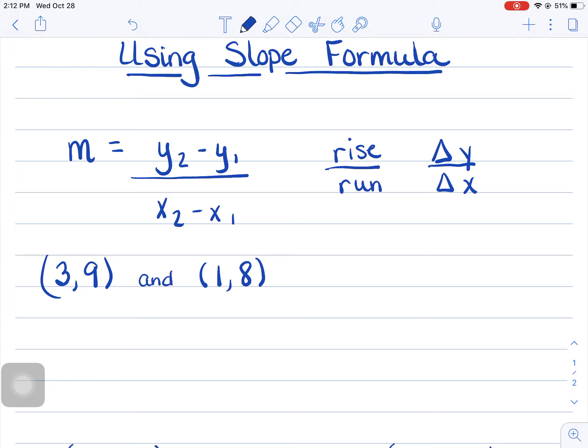So our formula is y2 minus y1, so we want to go ahead and label. It's a good thing to get in the habit of labeling when you first start. We're going to call this one x1 and y1 and x2 and y2. When you set up and solve your problems, you need to set up using the formula method. We're looking for y2, which we see is 8, minus - that's part of the formula - 9, over 1. Because we started with y2 over here, we've got to start with this partner, 1 minus 3.